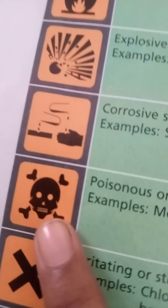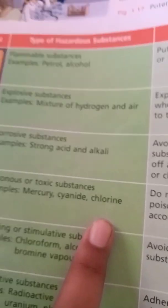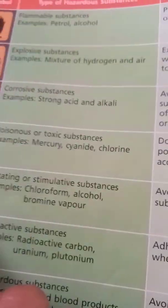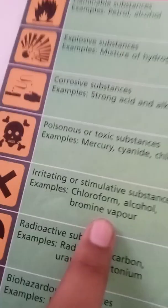You have seen this type of symbol which means poison, or toxic substances. Examples are cyanide, chlorine, and mercury. With chlorine you can get fainted, and mercury is inside thermometers — if it breaks it can burn your skin. Do not eat, drink, or taste these poisonous substances. Use them according to instructions. Next comes irritating substances.